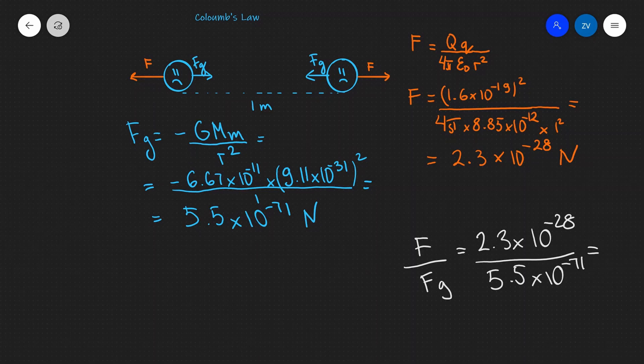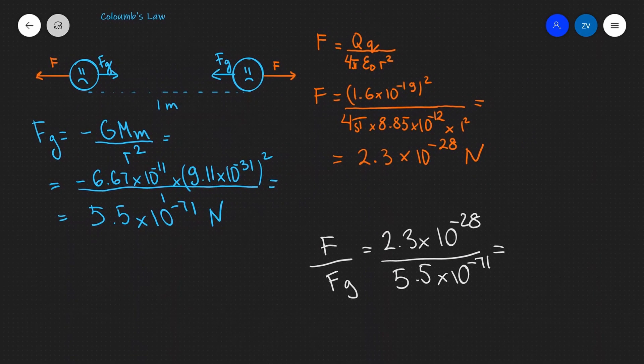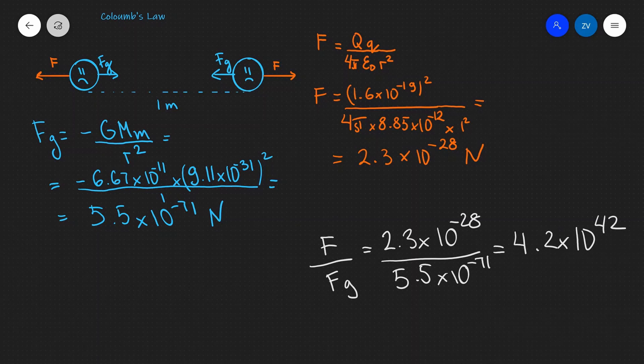If I take the ratio, this is going to give me a humongous number of approximately 4.2 times 10 to the power of 42.